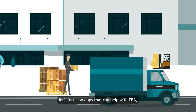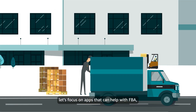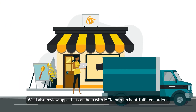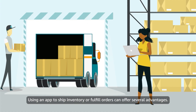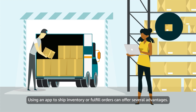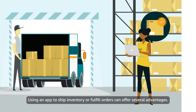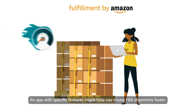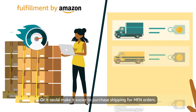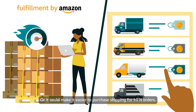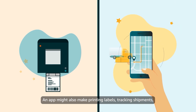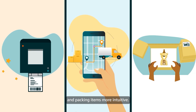Now that you know a little more about third-party apps and where to find them, let's focus on apps that can help with FBA, or Fulfillment by Amazon, shipments. We'll also review apps that can help with MFN, or Merchant Fulfilled Orders. Using an app to ship inventory or fulfill orders can offer several advantages. An app with specific features might help you create FBA shipments faster, or it could make it easier to purchase shipping for MFN orders. An app might also make printing labels, tracking shipments, and packing items more intuitive.